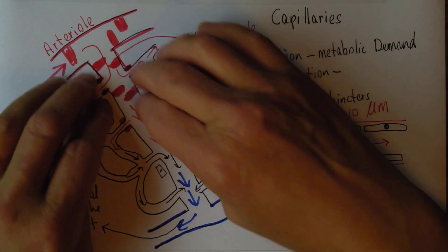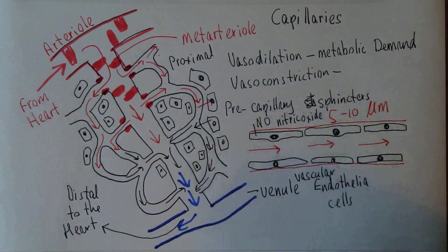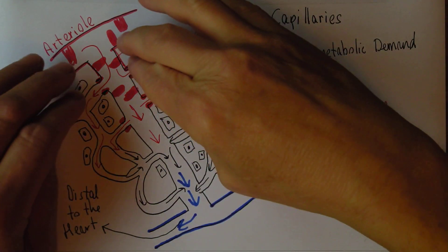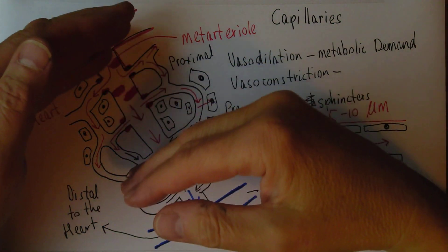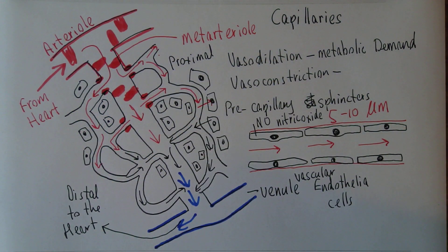In the skin, blood flow is also controlled by temperature. When it's cold, there's going to be peripheral vasoconstriction reducing the blood supply, so the surface of the skin goes cold. When it's warm and we want warm blood near the surface to be cooled, these vessels vasodilate, increasing the blood flow.